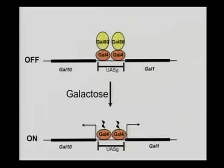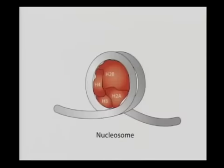If you add galactose, which is the signaling system, you expose an activating region, and the genes go on to a huge amount. But if you take galactose away, the gene is off — very low basal level. So you don't have the same problem in eukaryotes as you do in bacteria. A lot of the answer has to do with the fact that DNA is coated in nucleosomes.